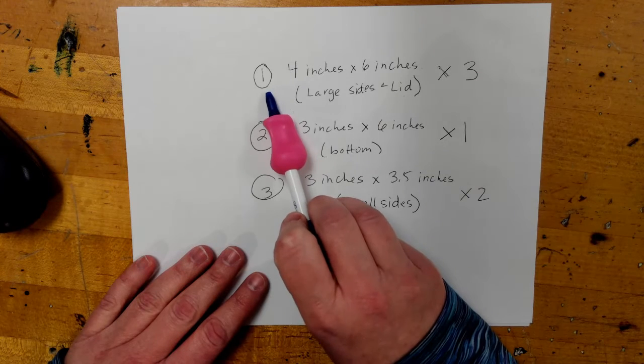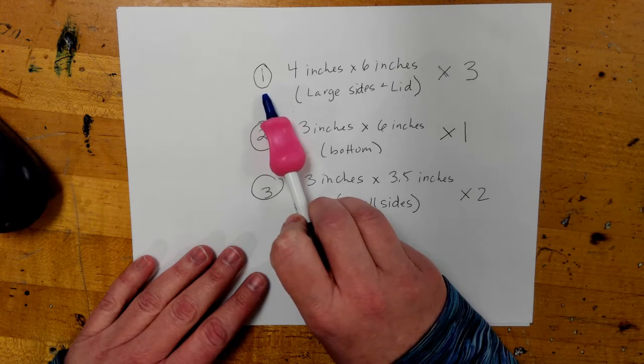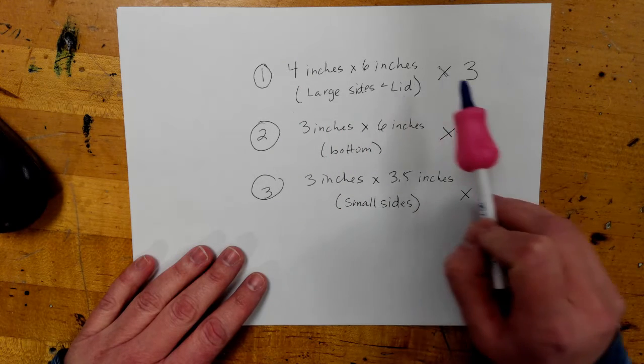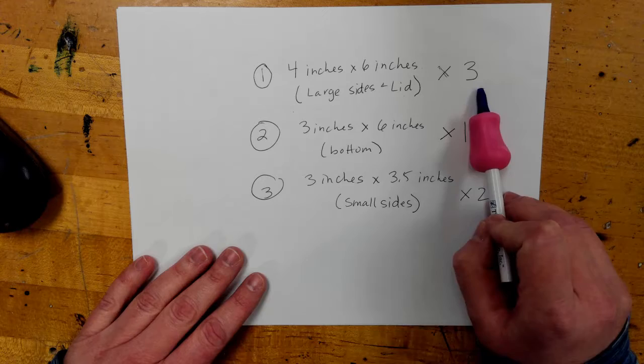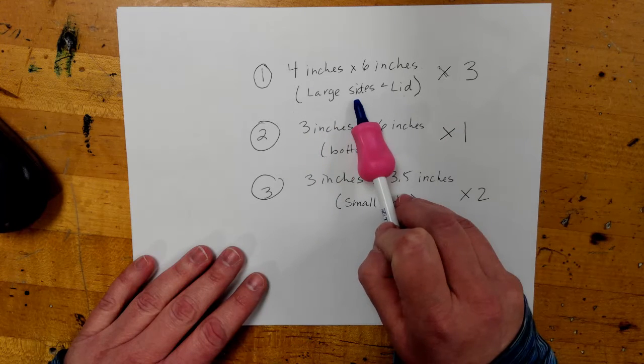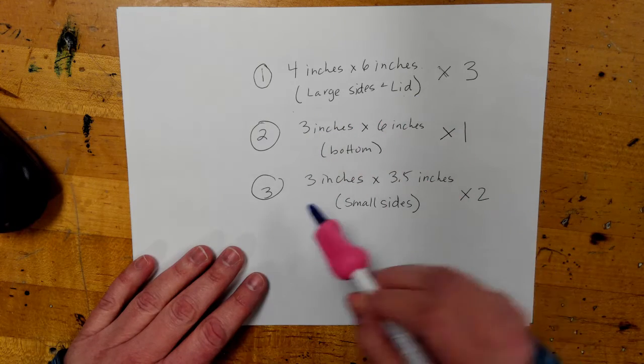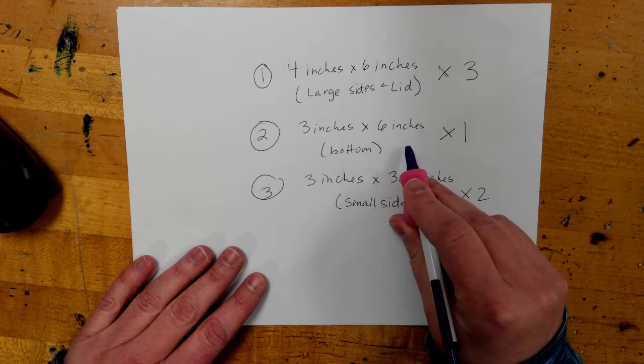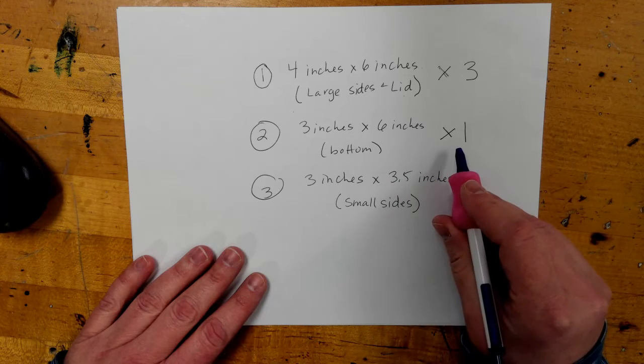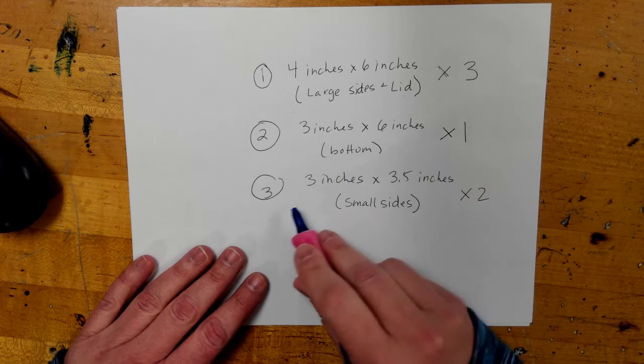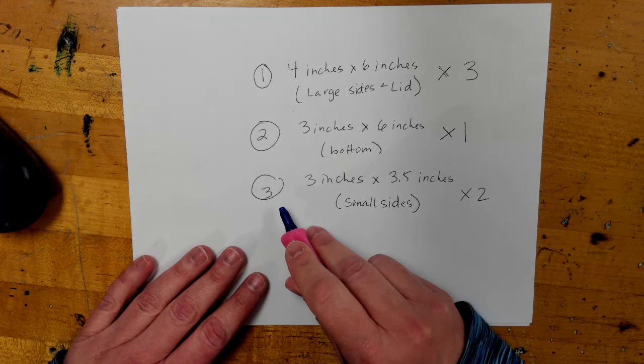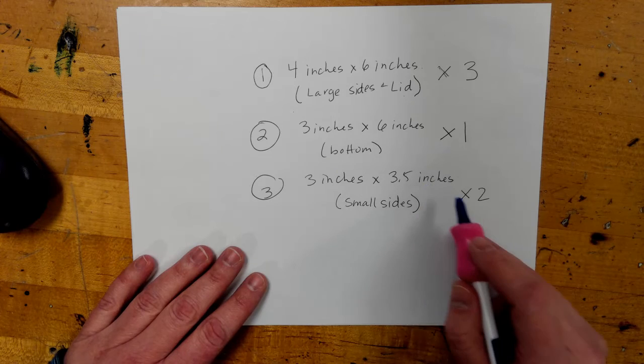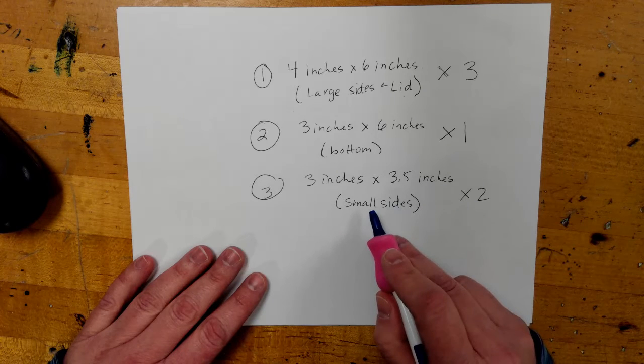The first rectangle that you're going to need to measure out is four inches by six inches, and you'll need three of those. That's going to be for your large sides and the lid. The second rectangle that you'll have to measure out today is going to be three inches by six inches, and you'll just need one of those, and that's for the bottom. And then the third rectangle size that you'll need is three inches by three and a half inches, and you'll need two of those. That's going to be for your small sides.